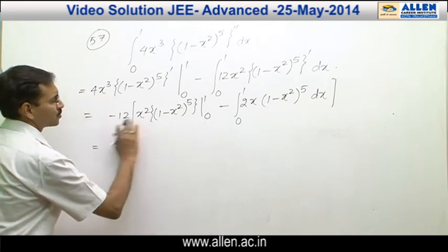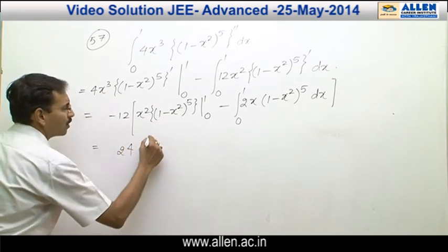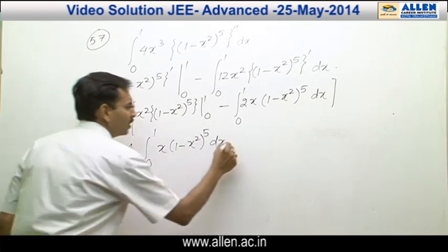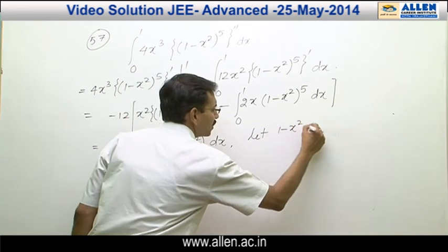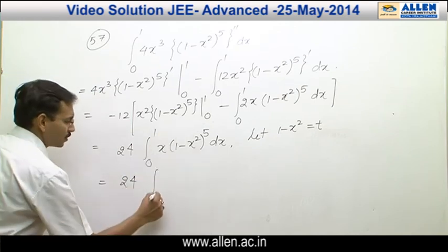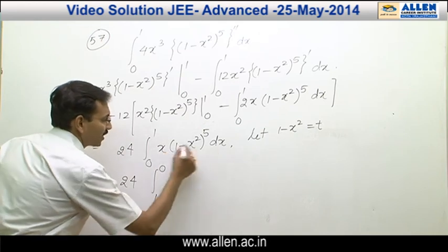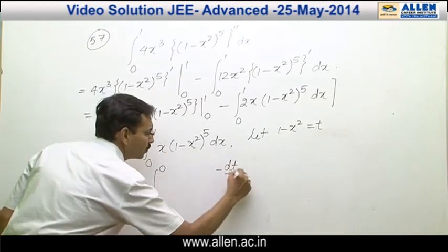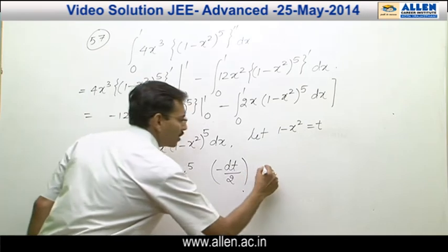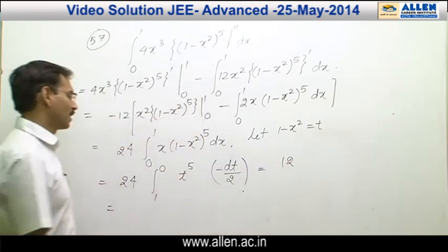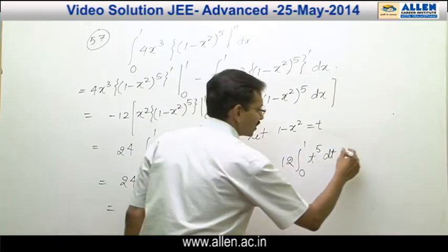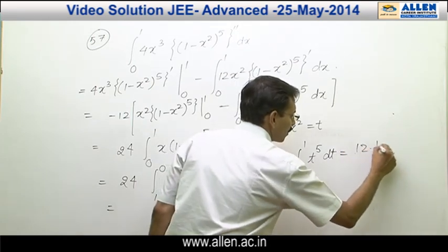The boundary terms again vanish, leaving us with 24 times the integral from 0 to 1 of x times (1 minus x squared) raised to the power 5 dx. Using the substitution t equals 1 minus x squared, so x dx equals minus dt over 2, and the limits become t equals 1 to t equals 0. This simplifies to 12 times the integral from 0 to 1 of t to the power 5 dt, which equals 12 times t to the power 6 over 6, giving 12 times 1 over 6, which equals 2.